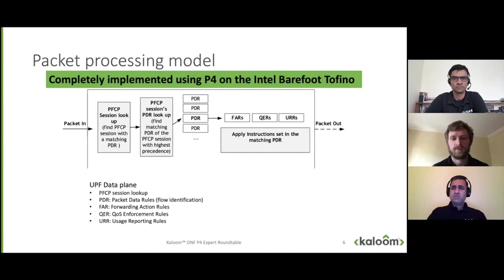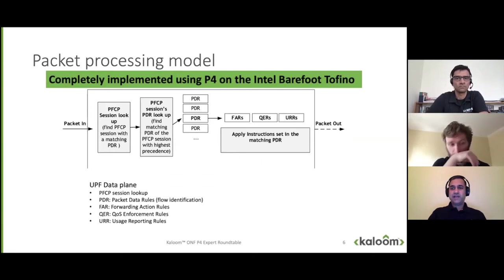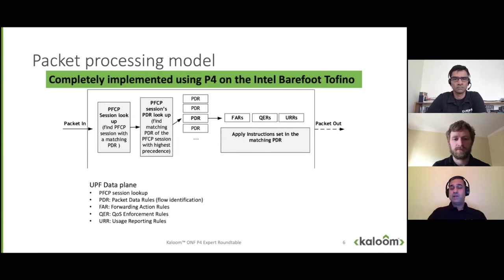The packet processing model is pretty straightforward and similar to other applications — the names and operations differ slightly. Instead of PPPoE in the BNG case, we're doing GTP encap and decap. We do session lookups, look at PDRs — think of them as a filter profile for packets — and then execute actions, which could be encap, decap, traffic steering, or lawful intercept. Then we go through QoS rules: policing, shaping, queuing. And finally, usage reporting. That's how the pipeline looks in a very abstract way.